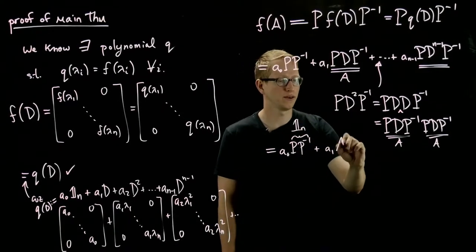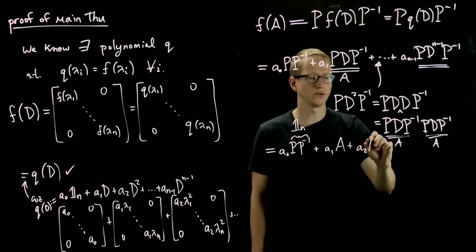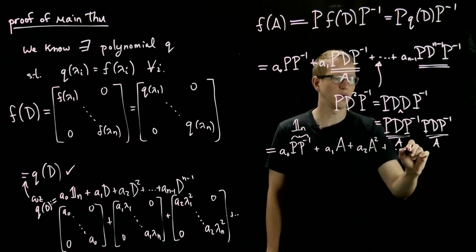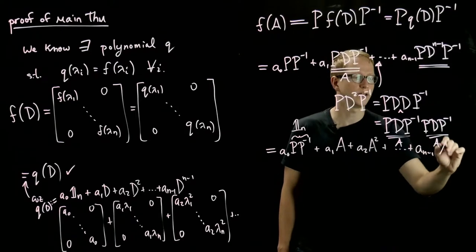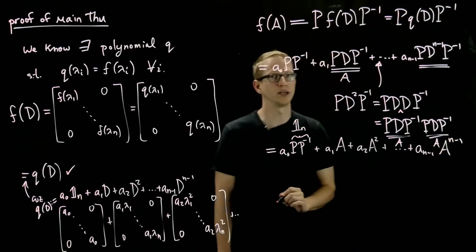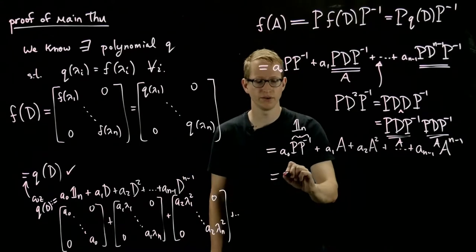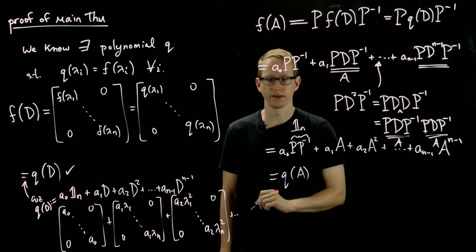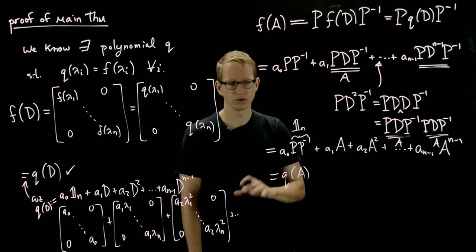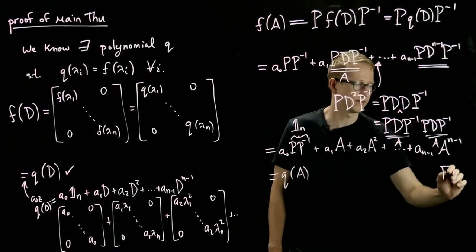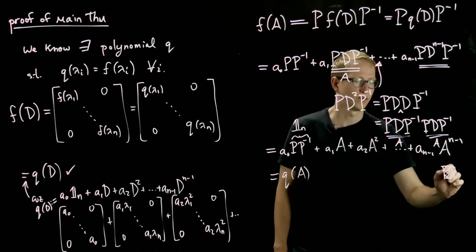And this is A plus A2 A squared plus all the way up to A n minus 1 A to the n minus 1. And this is the definition of q of A. So this shows us that that theorem is true.